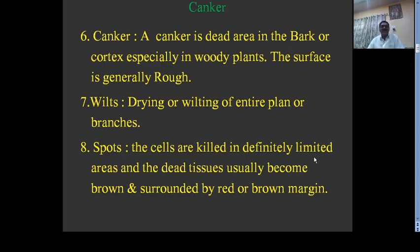Spots: cells are killed in definitely limited areas, and the dead tissues usually become brown, surrounded by red or brown margins. Such diseases are called spots, such as alternaria leaf spot of tomato.